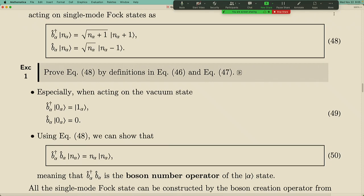Given that there is this square root n factor in the annihilation operator, there's almost no choice but that the creation operator must have this square root n+1, because otherwise the creation operator would not be the Hermitian conjugate of the annihilation operator. This pre-factor actually has to do with the number of ways you can insert or delete a particle. If you already have n particles, there are n+1 different places to insert a new particle and n different places to remove one.